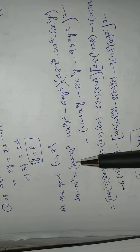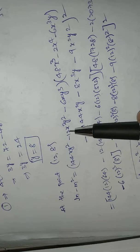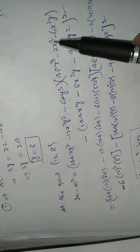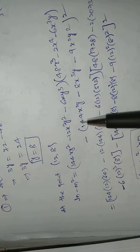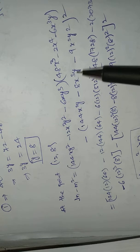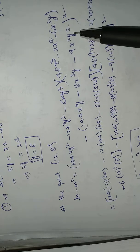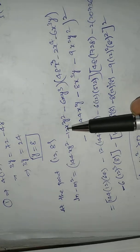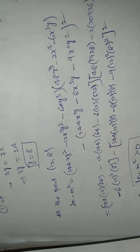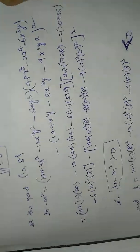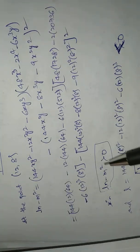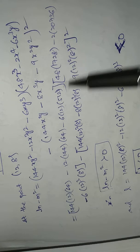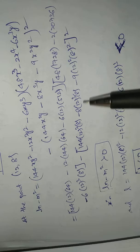At the point x equals 12 and y equals 8, we evaluate LN minus M squared. Substituting these values into L, N, and M and simplifying, we find that LN minus M squared is greater than zero. This positive result confirms we are at an extremum.